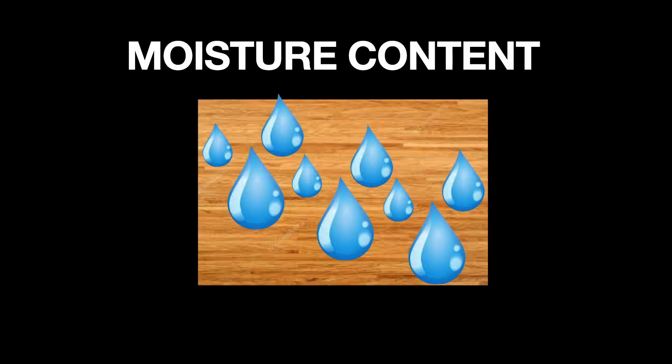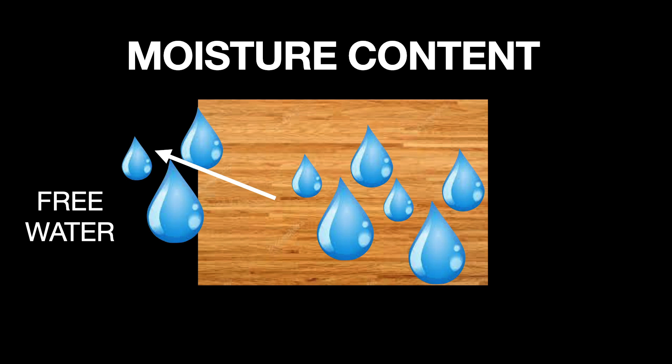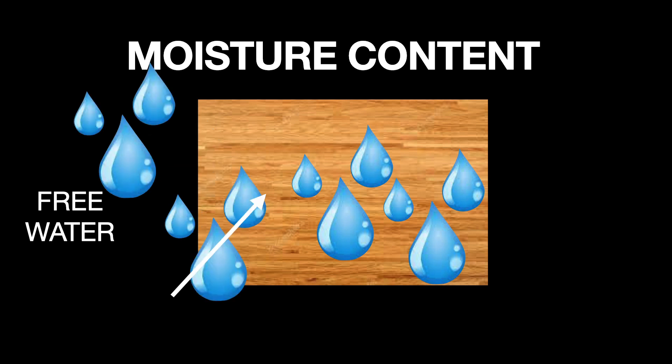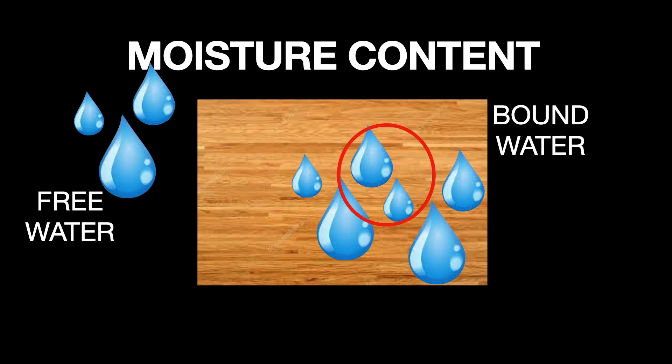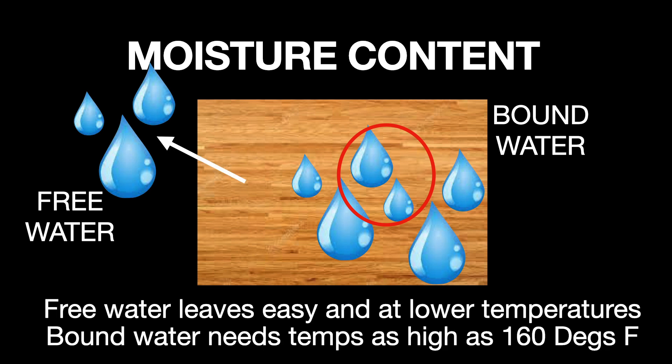The moisture content of wood is made up of two types of water. The free water will leave and enter the wood fairly easily and at low temperature. Once the free water has been removed, only bound water remains. This bound water is found within the cellular structure of the wood. It's harder to remove, takes longer, and requires a bit more energy.